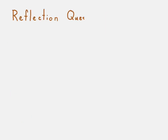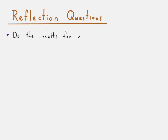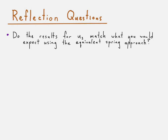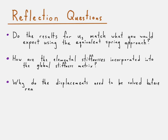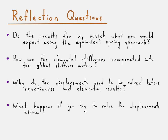That brings us to the reflection questions. One: do the results for the displacement at node three match what you would expect using the equivalent spring approach from a physics course? Two: how are the elemental stiffnesses incorporated into the global stiffness matrix — how do we know where to place those values? Three: why do the displacements need to be solved before we can solve for the reactions and elemental results? Finally: what happens if you try to solve for the displacements without applying constraints — that is, before reducing the global stiffness matrix equation? Those are the reflection questions, and that concludes this video.